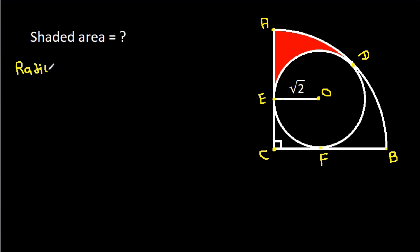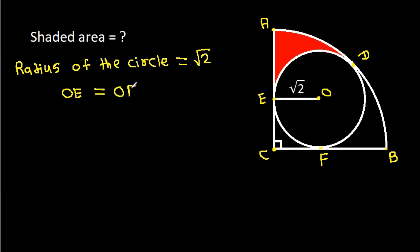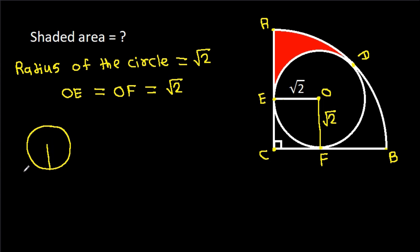The radius of the circle is square root of 2, so OE will be equal to OF, that will be square root of 2. Now, in any circle, the radius and tangent are perpendicular to each other, so this angle will be 90 degrees and this angle will be 90 degrees.